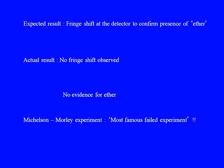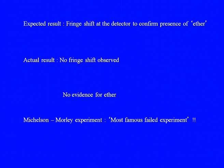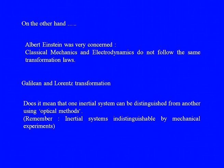The expected result was that there would be a fringe shift at the detector, confirming the presence of ether. But the actual result — done in different seasons and at different times of day — was that no discernible fringe shift was observed. It was rechecked by other people with more sophisticated equipment, and there was no evidence of the ether frame. Jokingly, this is called the most famous failed experiment.